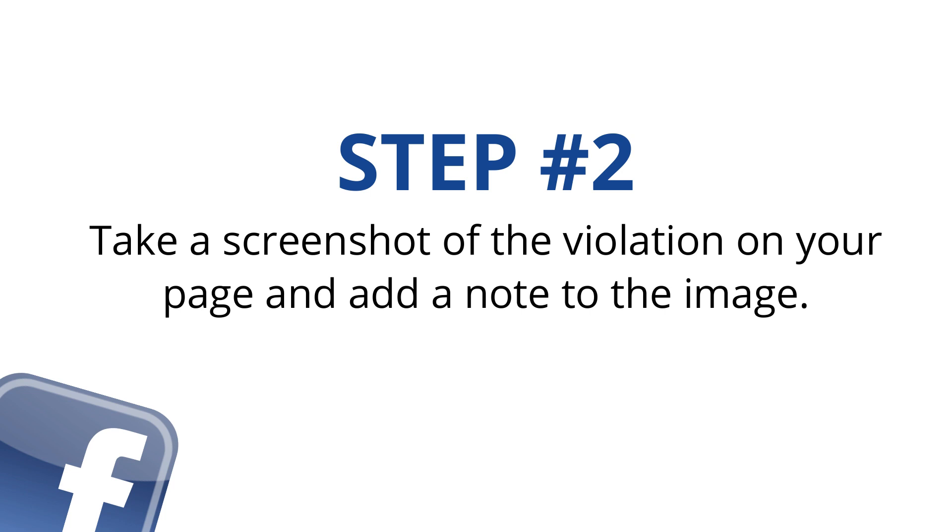Step number two is to take a screenshot of that specific violation on your Facebook page and add some text to that screenshot. This has worked for me multiple times for multiple violations, because when you're actually appealing a specific violation, Facebook doesn't allow you to add context to your appeal. So you have to be creative and find new ways to add more context on why you are appealing that violation.